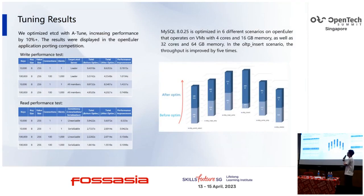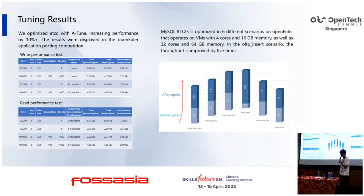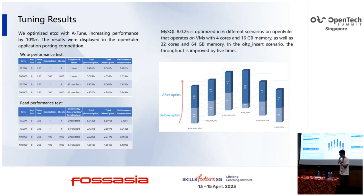There are also other tuning results. We optimized the ETCD system with ATUN, increasing performance by more than 10%. We also optimized MySQL in six different scenarios on OpenEuler, operating with virtual machines of four cores and 60 GB memory as well as 32 cores and 64 GB memory. In the OLTP instance scenario, the throughput is improved by five times.